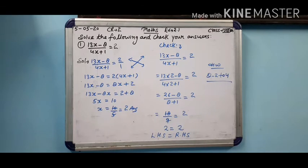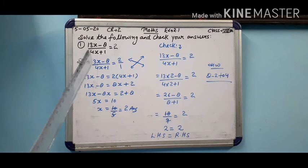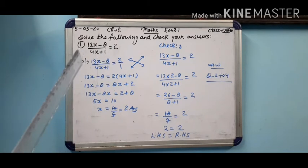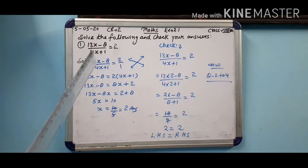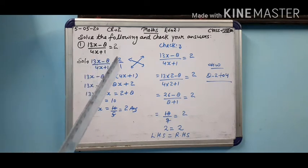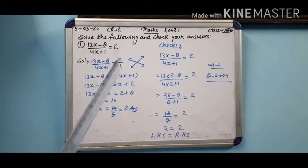Pahla question hai: 13x minus 8 upon 4x plus 1 is equal to 2. Sabse pahle aapne question utar liya. Solution mein 13x minus 8 upon 4x plus 1 is equal to 2. 2 ke niche humne number liya — 2 upon 1.